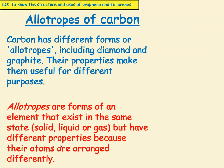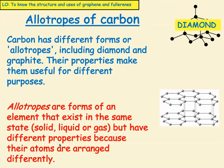An allotrope of carbon is when it has different forms, but it's made of the same element. So carbon has different allotropes — we've already met them in a previous screencast: diamond and graphite. Their properties make them useful for different purposes. What we mean by an allotrope are forms of an element that exist in the same state — solid, liquid or gas — but have different properties because of the way that the atoms are arranged. So they're both made of carbon, but because the atoms are arranged differently, they have different properties.